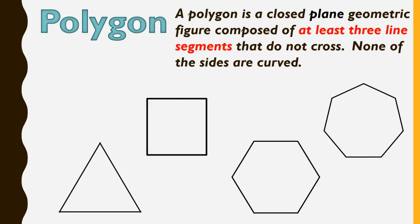It also says it has to have at least three line segments. So the very first polygon would be a triangle — it has three line segments. You'll notice from those last two definitions — no curves, at least three line segments — that means a circle is not a polygon. That's important to think about. It's an important shape, but it's not considered a polygon.